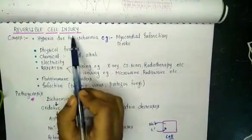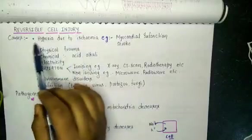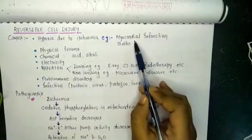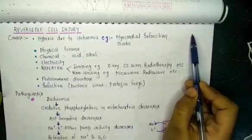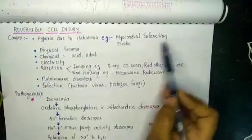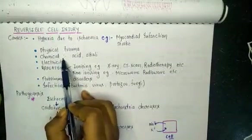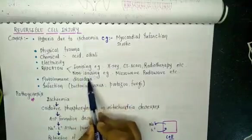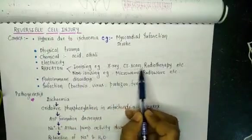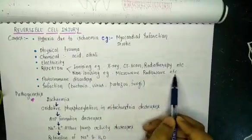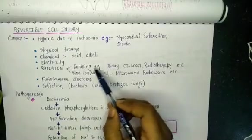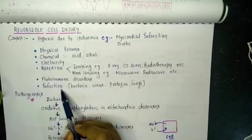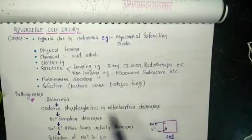Now the types of cell injury — first is reversible cell injury. Causes include: hypoxia due to ischemia (for example, myocardial infarction causing ischemia of heart cells, and stroke causing ischemia of brain cells); physical trauma; chemicals like acid or alkali; electricity; radiation (ionizing such as X-rays, CT scan, radiotherapy — which is more dangerous and can lead to cancer — and non-ionizing such as microwaves and radio waves); autoimmune disorders; and infection — bacterial, viral, protozoal, or fungal.